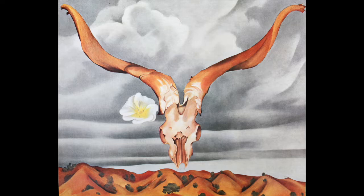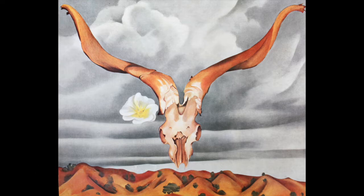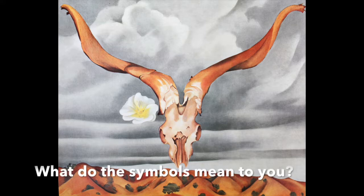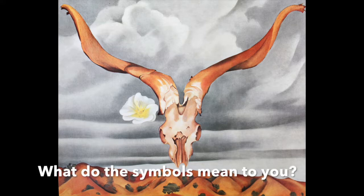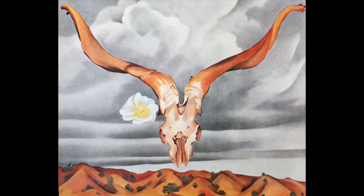This is a painting by Georgia O'Keeffe. How has she used symbols in her work? What do those symbols mean to you? Georgia O'Keeffe said that her bones were more alive than flowers. Why would she say this?